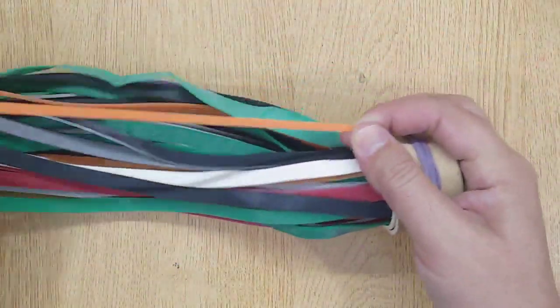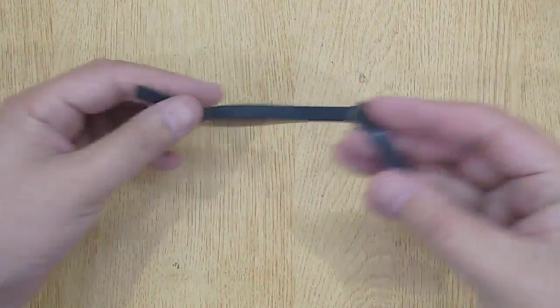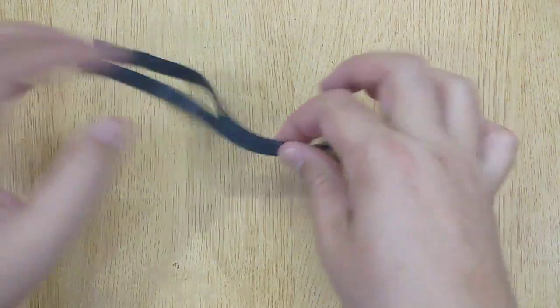The second thing you will need is a rubber band. Cut it into two equal pieces.